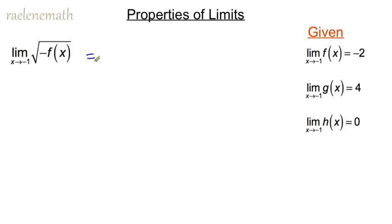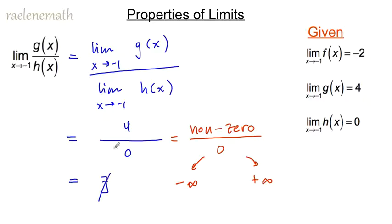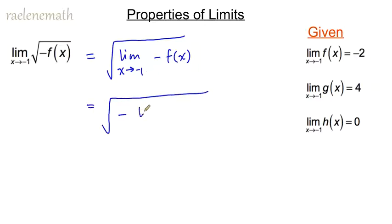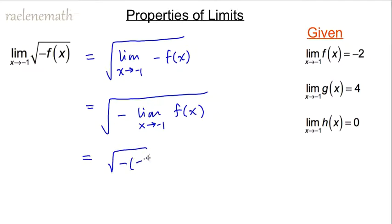For the last function, we can swap the order of the outer square root and the limit, as long as the inner limit exists. We have the limit as x approaches negative 1 of negative f(x). The negative coefficient comes in front of the limit, and substituting negative 2 for the limit of f(x), we get the square root of negative times negative 2, which is the square root of 2 — a real value — so the limit exists.